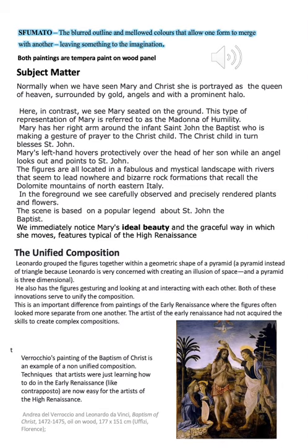A unified composition was a new thing — it wasn't there in the early Renaissance. We have the picture down below, which we looked at before — when we looked at it last time it was to observe Leonardo's angel. But now I'm referencing it because it is by Verrocchio. There is nothing unified about this composition. All the characters are placed together one by one but they almost have no connection to each other, as if they are all painted in isolation. That would be a non-unified composition.